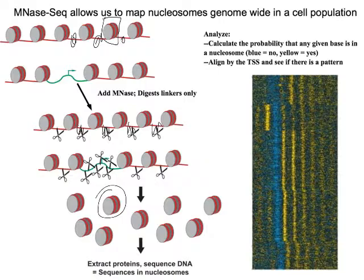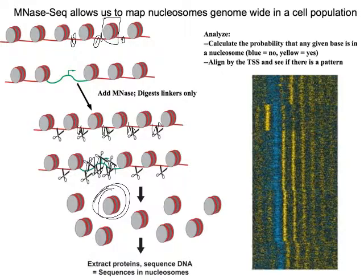We can then extract the histones away from the DNA and then just sequence everything that's left behind, and map that back onto the genome and ask: for any particular piece of DNA, what's the probability that it was still found in the nucleosome versus the probability that it was chewed up by the micrococcal nuclease?